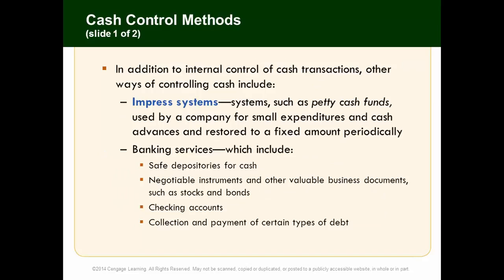Some cash controls beyond internal control over transactions include an imprest system — basically a petty cash fund used by a company for small expenditures and cash advances, normally restored to a fixed amount. Many businesses keep a $100 petty cash drawer. For example, if you need bagels for a morning meeting, you take $10 from petty cash, buy the bagels, and bring back the receipt. It's for occasional small cash needs with specific approved uses.